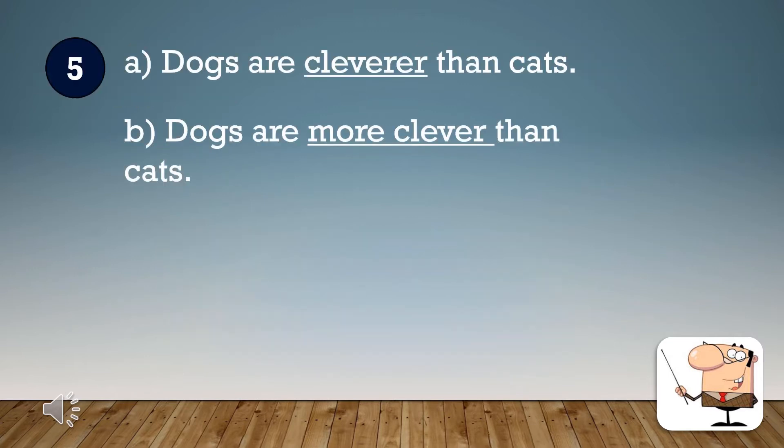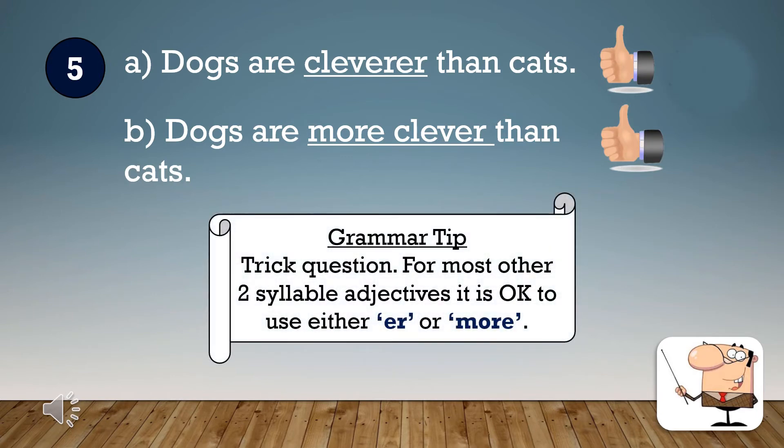Number five. Dogs are cleverer than cats. Dogs are more clever than cats.